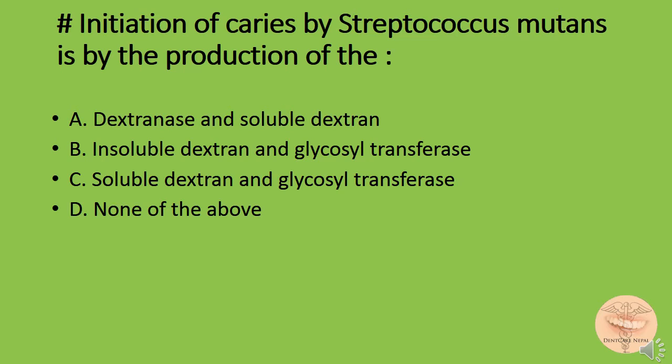Initiation of caries by Streptococcus mutans is by the production of: option A) dextranase and soluble dextran, option B) insoluble dextran and glucosyl transferase, option C) soluble dextran and glucosyl transferase, or option D) none of the above. The correct answer is option B: insoluble dextran and glucosyl transferase.